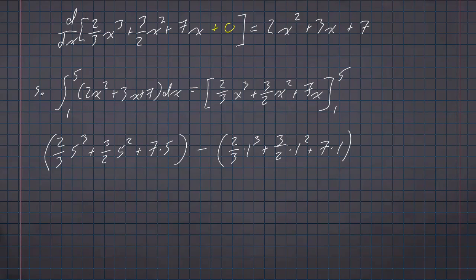Five cubed is 125 times two is 250. Five squared is 25 times three is 75. And then we have minus 2/3, we have minus 3/2. Remember to distribute that subtraction, and minus seven.